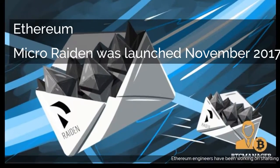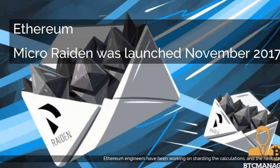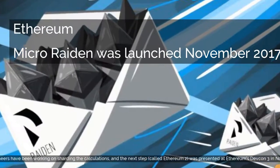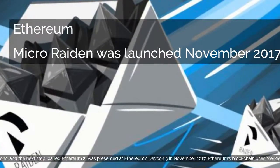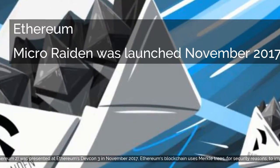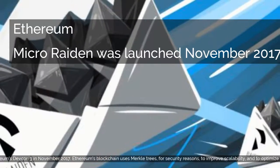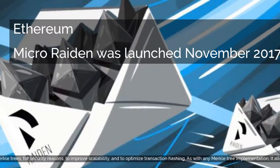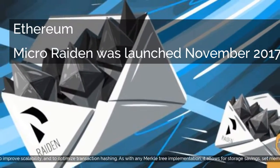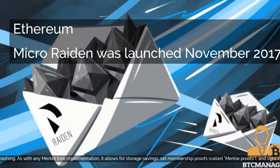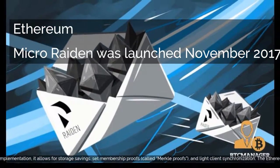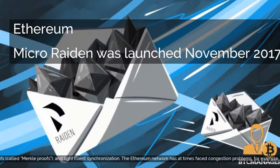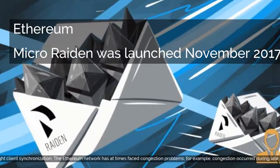Ethereum engineers have been working on sharding the calculations, and the next step, called Ethereum 2, was presented at Ethereum's DevCon 3 in November 2017. Ethereum's blockchain uses Merkle trees for security reasons, to improve scalability, and to optimize transaction hashing. As with any Merkle tree implementation, it allows for storage savings, set membership proofs called Merkle proofs, and light client synchronization. The Ethereum network has at times faced congestion problems, for example congestion occurred during late 2017 in relation to CryptoKitties.